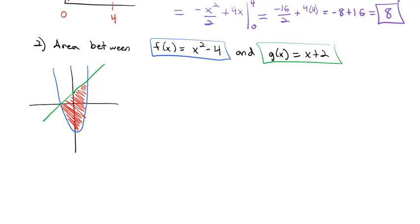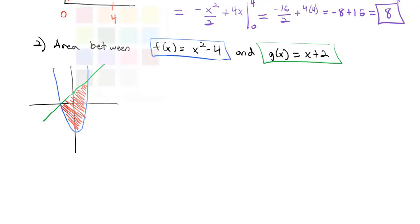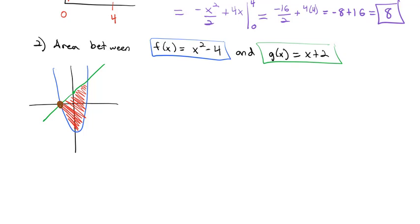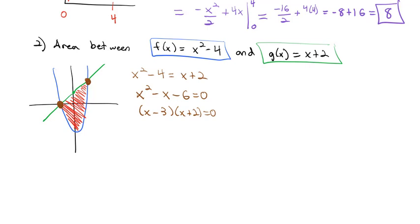Our x values are going to range to a bottom point on the left and grow to a top point on the right, but we don't know those x values yet. We find them by setting the functions equal to each other: x squared minus 4 equals x plus 2. Subtracting x gives x squared minus x, subtracting 2 gives minus 6. Factoring to (x minus 3)(x plus 2), we see x equals positive 3 and negative 2.